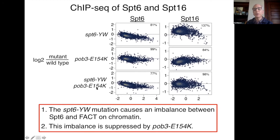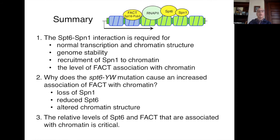Going down to the suppressed condition: the effect on SPT6 is about the same, but due to the Pob3 mutation, which we believe weakens FACT's interactions with chromatin, we now see a reduced level of Spt16 on chromatin and the balance of FACT and SPT6 is largely restored. We think this rebalancing is connected to suppression — the level of SPT6 or Spt1 on chromatin appears to affect the level of FACT on chromatin.